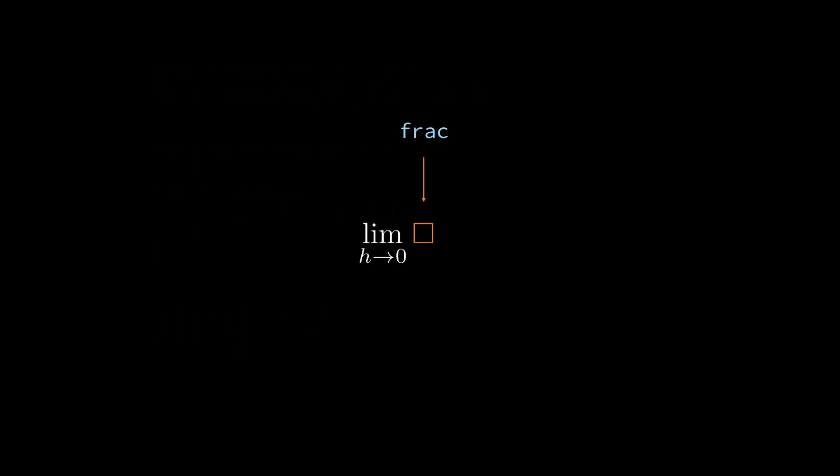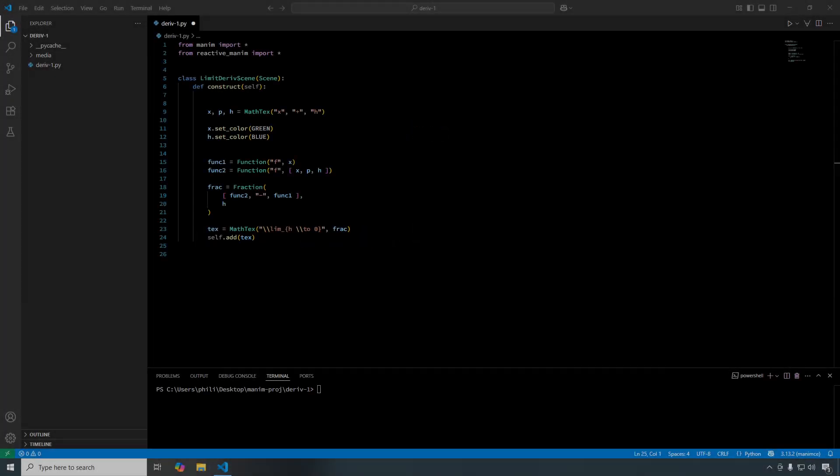Now, we want to add a prefix before the fraction so that it reads the limit as h approaches 0. We can do this by placing the fraction into a math text that includes this prefix. This completes the limit derivative expression. You can pause the video if you want to look at the code.